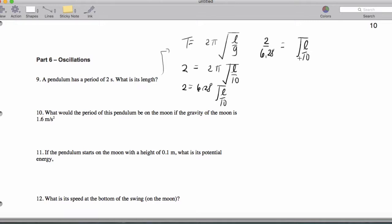That's going to give me 0.318 equals the square root of L over 10. Now we square both sides. That's going to give me 0.101 equals L divided by 10.